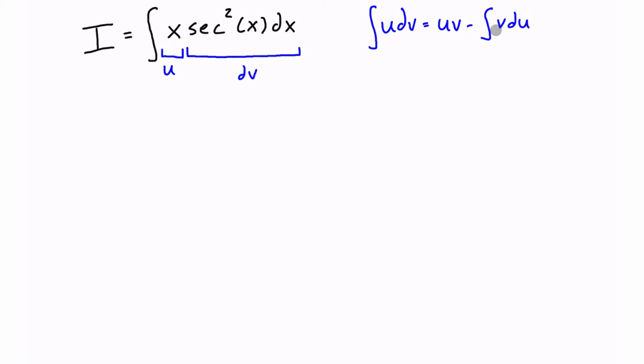So the way that we do that is we just go ahead and we take u, which is equal to x, and we're going to derive that with respect to x, so we have du dx, so the derivative of x is just equal to 1, then we can rearrange this a little bit, so we have du is equal to dx.